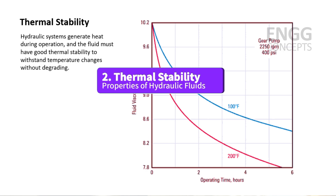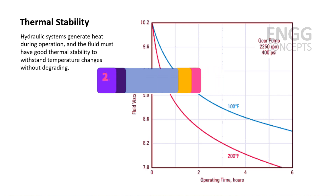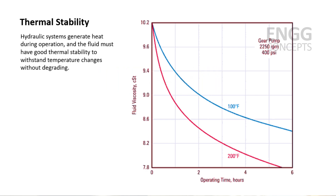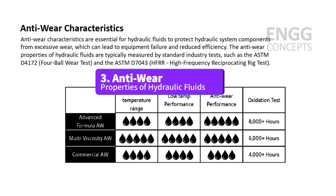The next property is thermal stability. Hydraulic systems generate heat during operation, and the fluid must have good thermal stability to withstand temperature changes without degrading. This property ensures the fluid maintains its effectiveness over an extended period.